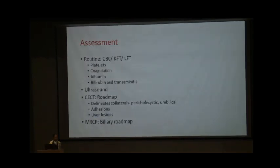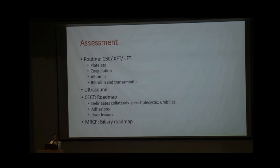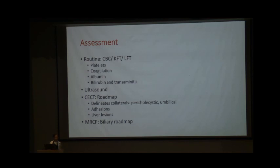In addition to routine cholecystectomy workup, specific assessments are needed. Platelets should be above 50,000 for surgery; coagulation abnormalities, albumin, bilirubin, and transaminases must be checked. Cross-sectional imaging (CT) is important to map collaterals in the abdominal wall for port placement, identify pericholecystic collaterals, plan transfusion requirements, anticipate the need for subtotal cholecystectomy, assess relations with colon and duodenum, evaluate adhesions, identify additional liver lesions, and document ascites. MRCP serves as a biliary road map for the surgeon.